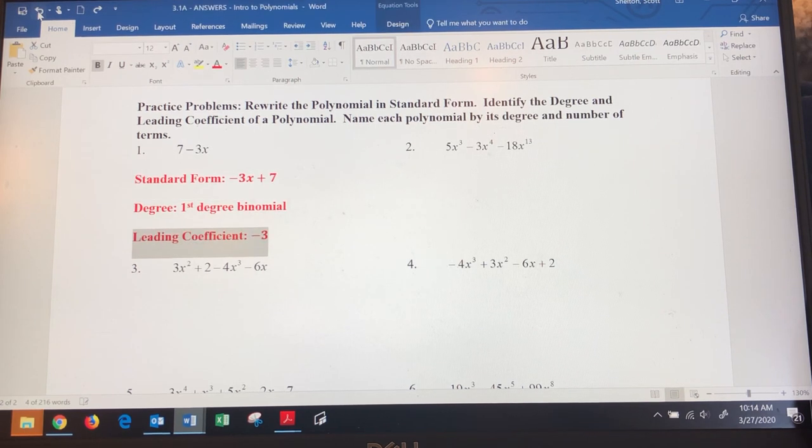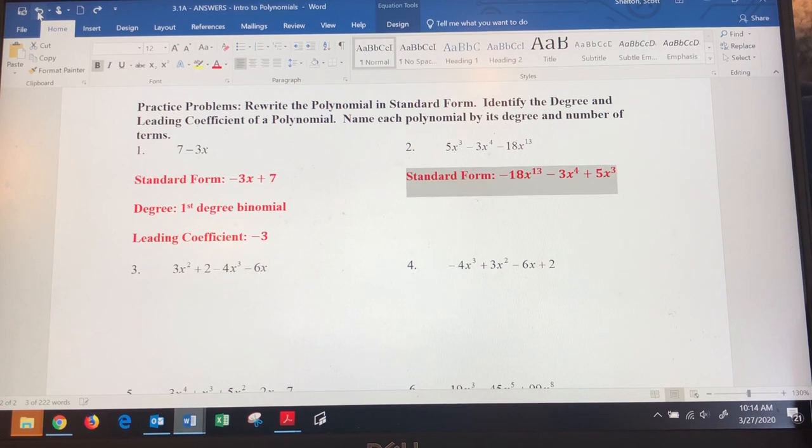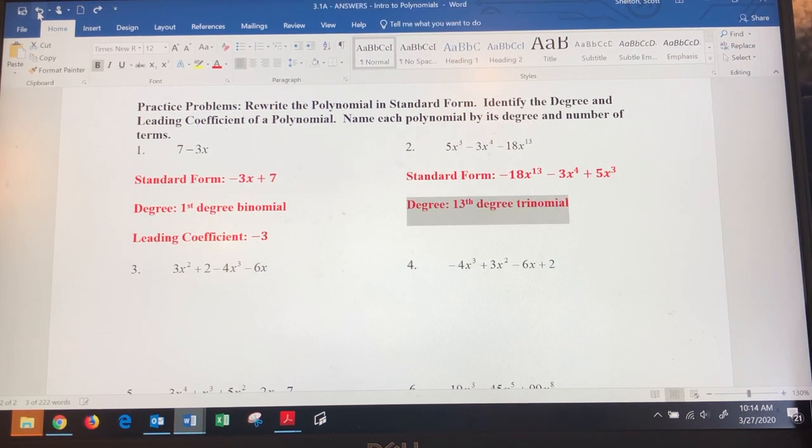Number two: once we rearrange, we get -18x^13 - 3x^4 + 5x^3. That makes it three terms, so it's a 13th degree trinomial. The leading coefficient is -18.